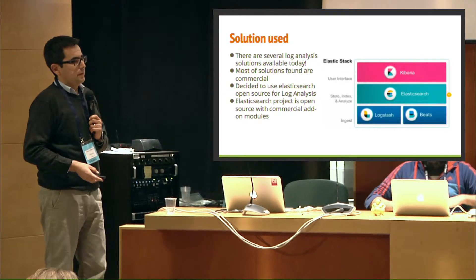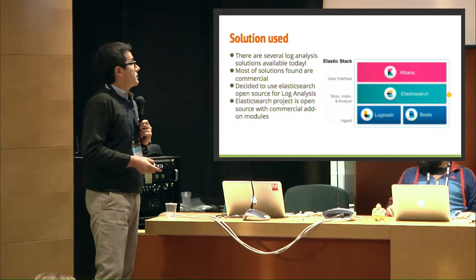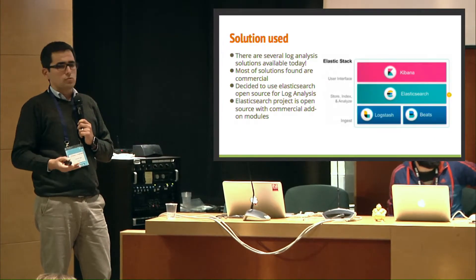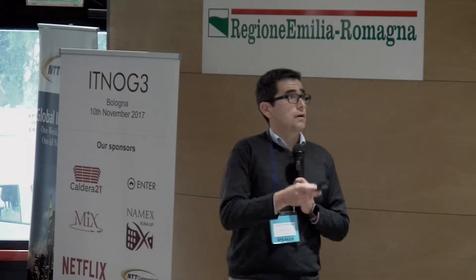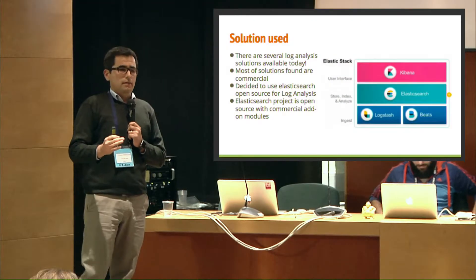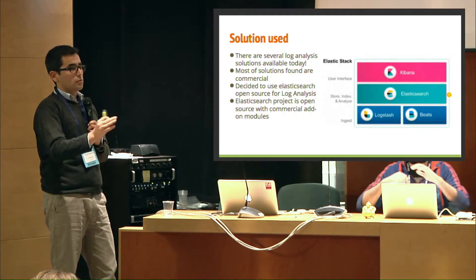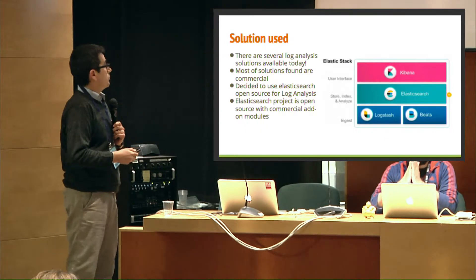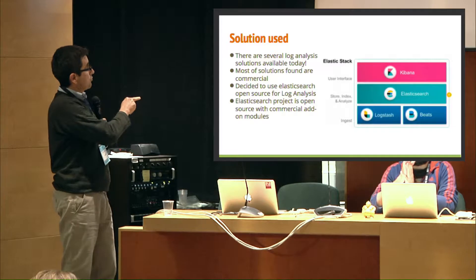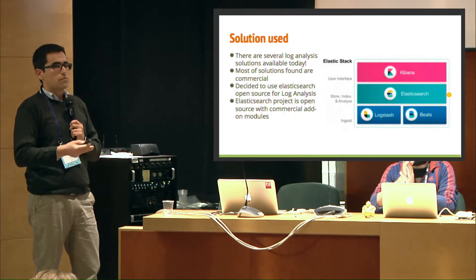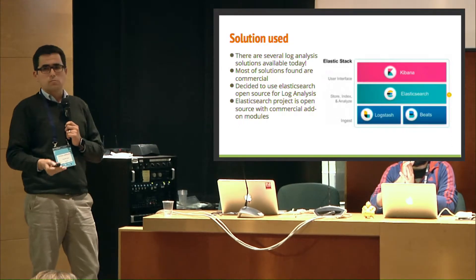To overcome this issue, we found an open source project called Elasticsearch, which was a great solution. We started using it first for a customer, then for ourselves. They proposed this kind of stack — not a network stack, but different software components mixed together that talk to each other. These components can be installed on one server, two servers, or one component per server. Alternative commercial solutions like Splunk exist and are great, but Elasticsearch was much more flexible for our case.